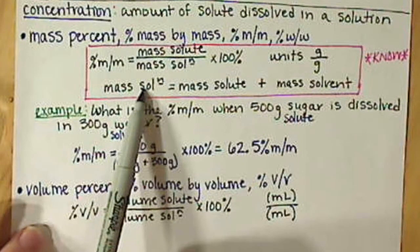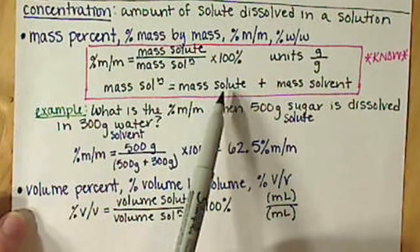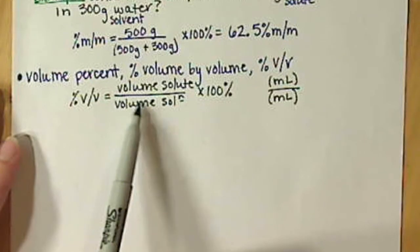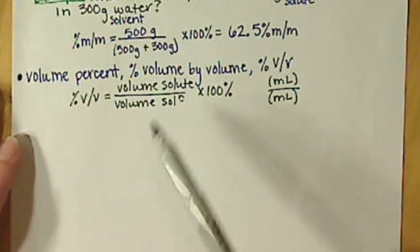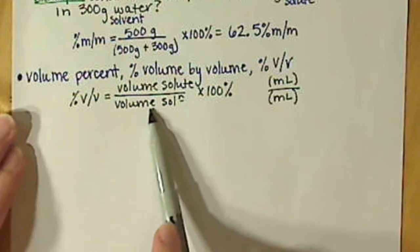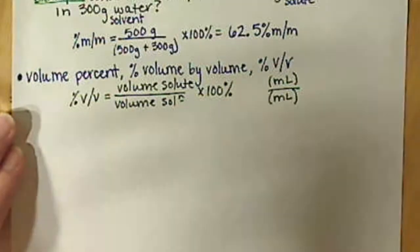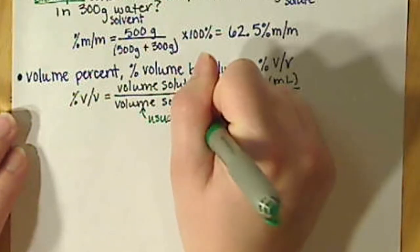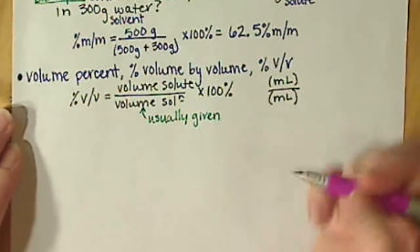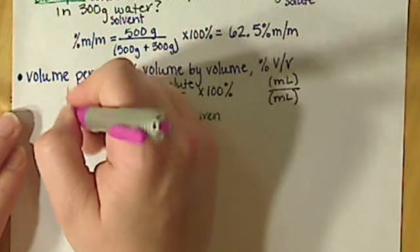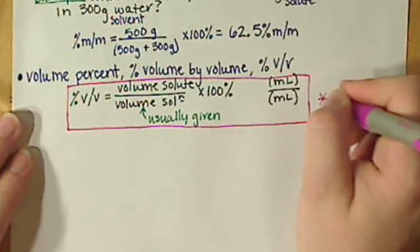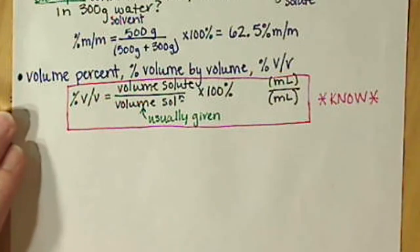Unlike mass, volumes are not simply additive. Masses are conserved, so mass of the solution equals mass of solute plus solvent — but we can't do the same with volumes. Volume depends on density, and density can change depending on the solute, solution, and solvent. So generally, the volume of your solution is given to you in the word problem, and you have to be careful when you read the question.